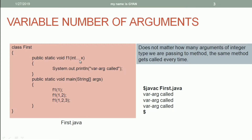Notice here, the variable number of arguments will be of type integer. Whatever we need to pass to the method f1 should be of type integer, but how many integer values we can pass to f1 is not fixed. To define a variable number of arguments, we use the data type followed by three dots — integer followed by three dots, followed by a space and the variable name x. These three dots denote that x is not of type integer, but is of type variable number of arguments of type integer. So when we declare a method using variable number of arguments, we can call that method with a variable number of arguments.